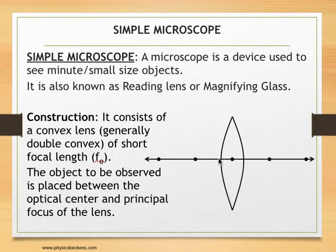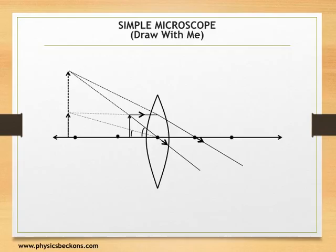The ray diagram: you have the lens, the object. A ray parallel to principal axis is known to pass through focus. Another ray passes through optical center undeviated.